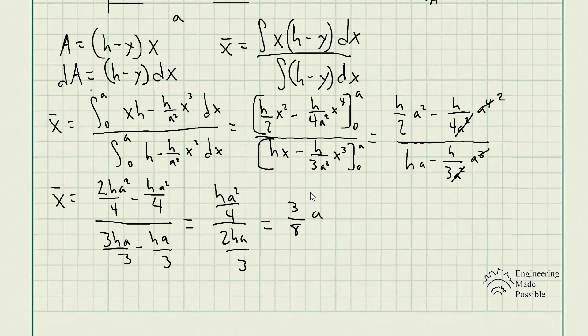So we finally have x-bar is equal to 3a divided by 4. So this is where, with respect to the x location, the centroid of the area is located. Now you can actually do the same problem but find the y-bar, so you can actually define the center of the area.